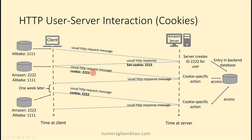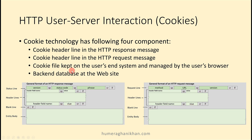When the client is requesting something, the server has already specified a cookie for this client, so the client sends its cookie number in the request. Third is the cookie file kept on the user's end system and managed by the user's browser — cookies are kept on the client computer and managed by the browser. Fourth is the backend database at the website, such as on the amazon.com or alibaba.com server, where they keep a record of the cookies.